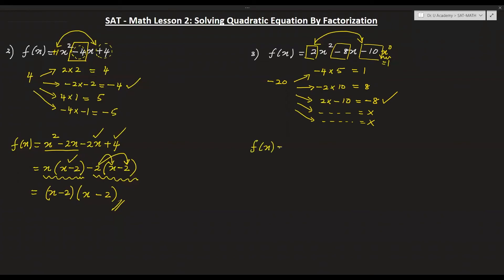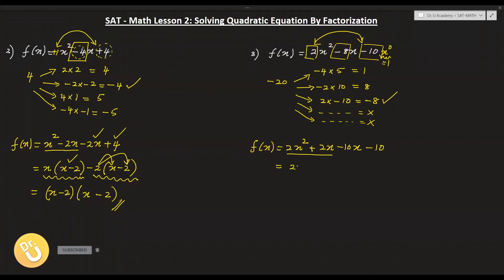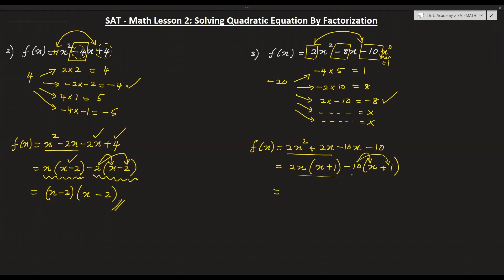Rewrite the function: f(x) = 2x squared plus 2x minus 10x minus 10. From the first two terms, 2x is a common factor — take 2x out to get 2x(x + 1). From the last two terms, minus 10 is a common factor — take minus 10 out to get minus 10(x + 1). Now x plus 1 is common to both. Take x plus 1 out; the remainders are 2x and minus 10, giving (x + 1)(2x − 10) as the answer.